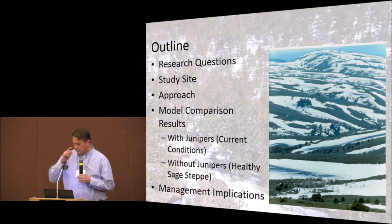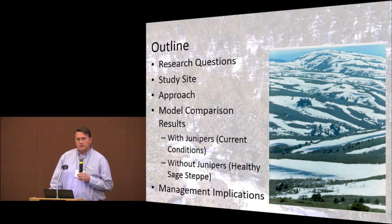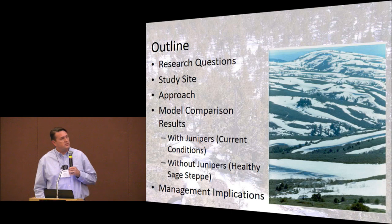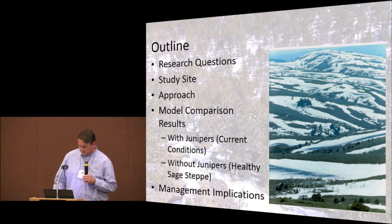The overarching goal is to better understand how juniper encroachment affects water availability for eco-hydrologic processes and vegetation attributes on snow-dominated rangelands, with snow being a key element of the talk. By way of outline, we'll go over research questions, the watersheds, the approach using field-collected data in concert with modeling, and then results and implications. This is an iconic figure from Reynolds Creek experimental watershed showing snow drifting, an important piece of what I'll discuss.